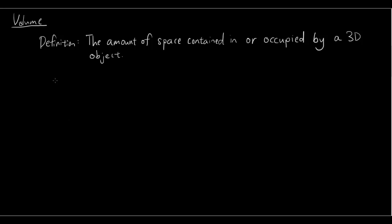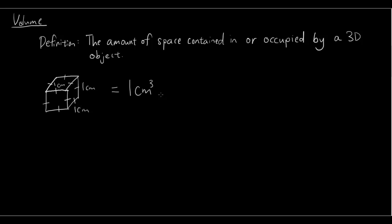I'm going to draw the simplest 3D object, which is a cube, and let's look at how much space is contained in it. This cube is going to have 1cm on every side — and as you know about cubes, every side is the same length. This cube is going to have a volume of 1cm cubed.